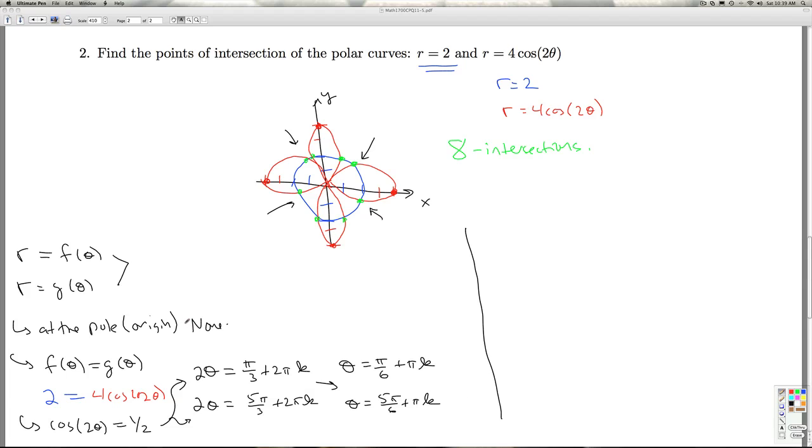Alright, so we look for intersections at the pole. If we don't have any there, we move on and do this. The other thing is, you replace r with the opposite of r and theta with theta plus pi in one of the equations.